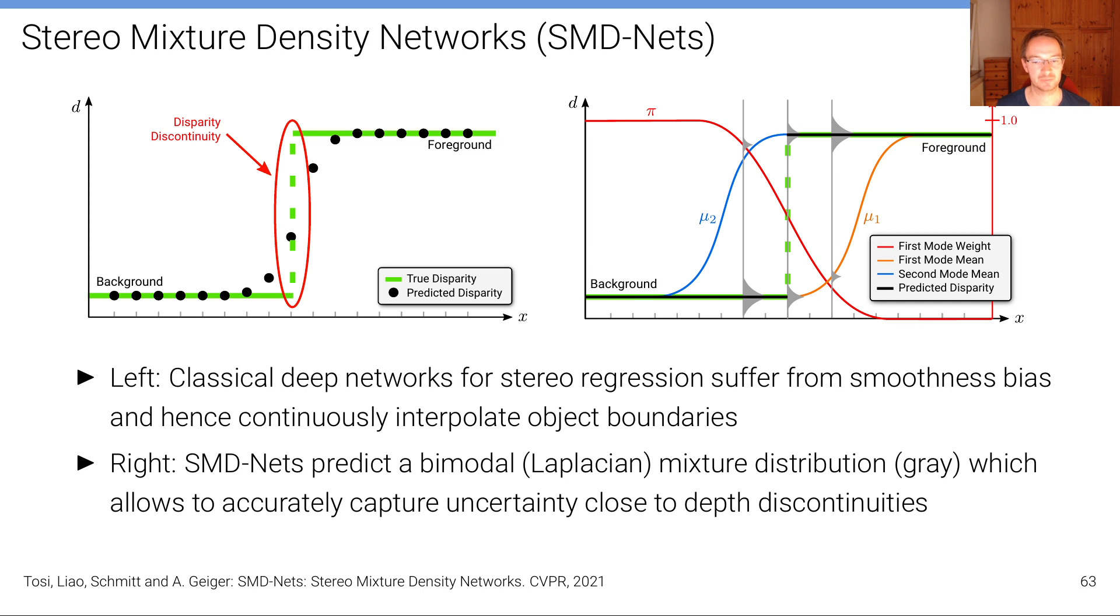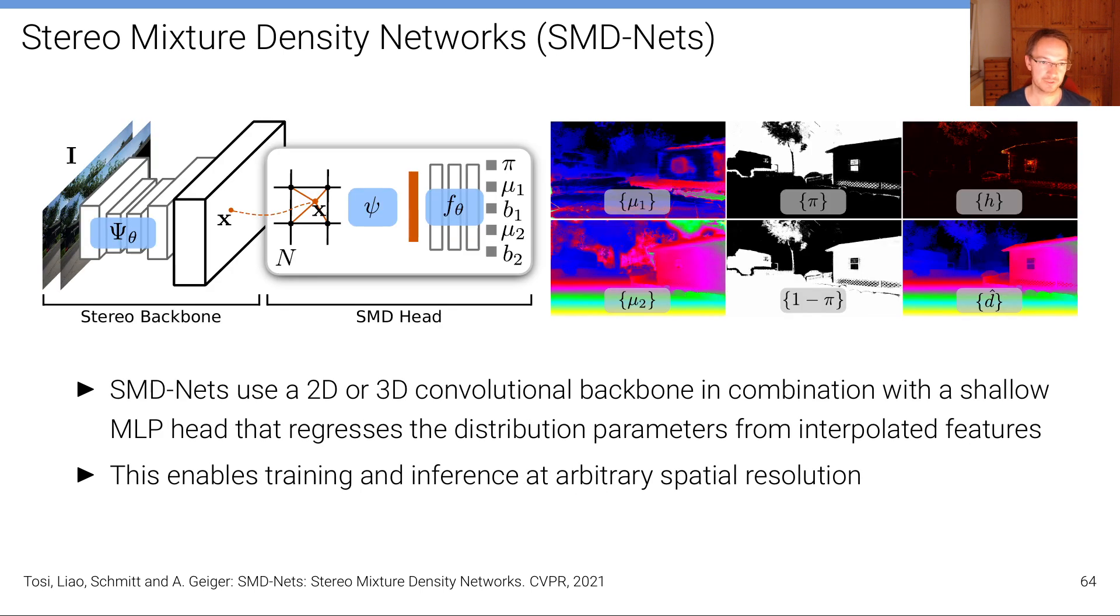It is a much better model for disparity maps. And the other innovation we did here is that on top of a standard stereo backbone and we experimented with various backbones, what we did is we didn't directly predict at a fixed resolution the output disparity or the parameters of this mixture model but we have an additional head, a so-called SMD head that queries using an MLP at an arbitrary continuous location in the image domain the feature values using interpolation, using bilinear interpolation and then passes these bilinearly interpolated features predicted by the backbone through this MLP in order to predict the parameters